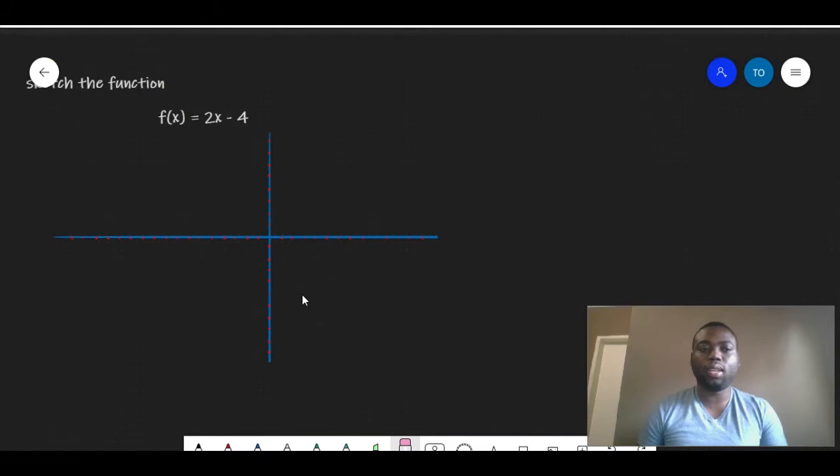This example explains what I mean. So the question says sketch the function f(x) equals 2x minus 4. For us to be able to draw a straight line, all we need is two points. And the two points I'm going to get is the x-intercept and the y-intercept.